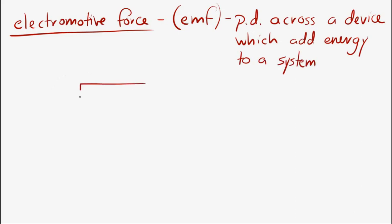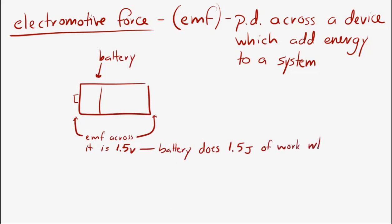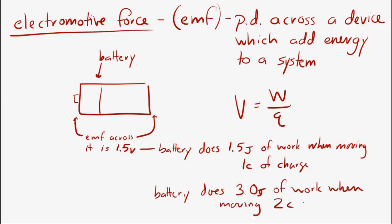So if you have a battery and the EMF across that is 1.5 volts, then the battery is doing 1.5 joules of work when it moves 1 coulomb of charge. And we can see that from the potential difference equation. Also, if there is a 1.5 volt EMF battery and it moves 2 coulombs of charge, you can use that equation to figure out how much work the battery does in moving the charge. It does 3 joules of work in moving that charge.